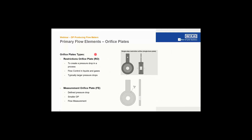When it comes to orifice plates, there are two basic types. First, restriction orifice plates — a straight bore through the body — which create a pressure drop used for pressure control in liquids and gases, typically for larger pressure drops. Second, flow measurement orifice plates, which have a defined pressure drop sized through calculations, a smaller DP, and are used for flow measurement. The measurement orifice plate has a counterbore in the back, which reduces the straight land area to have as little contact with the vena contracta as possible, increasing flow measurement accuracy.